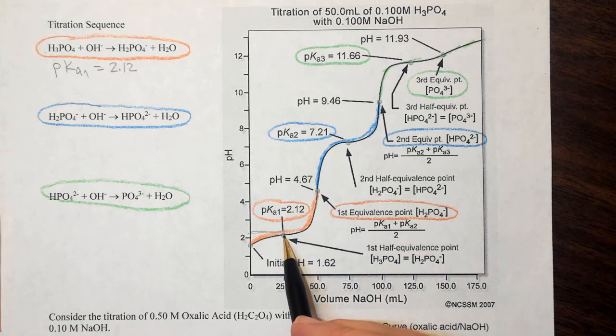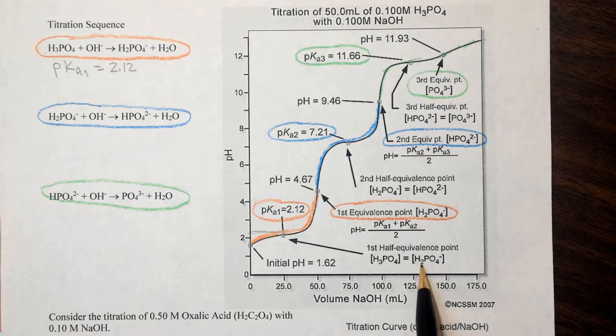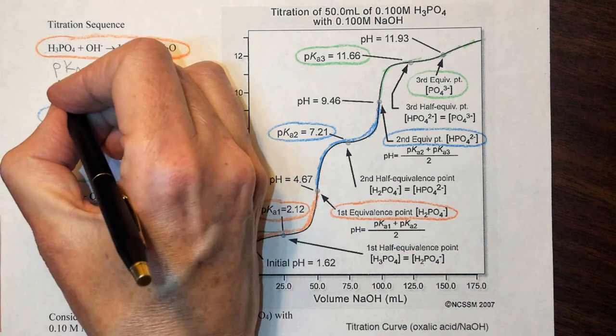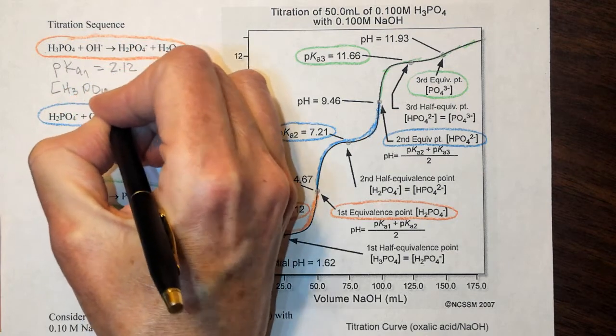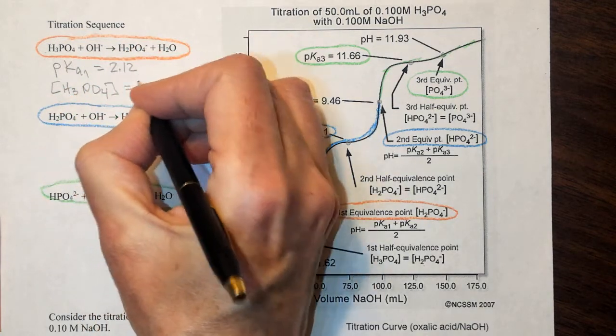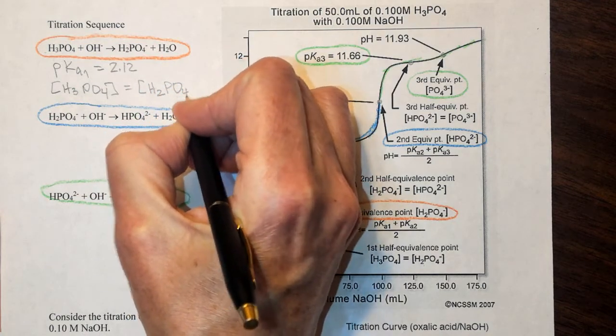Now let's notice here that at that first half equivalence point, the concentration of the phosphoric acid is equal to the dihydrogen phosphate. So let's go ahead and write that down. We have the concentration of H3PO4 is equal to the concentration of H2PO4 minus.